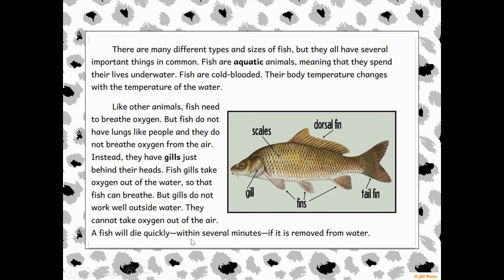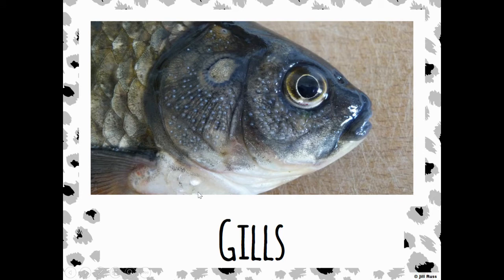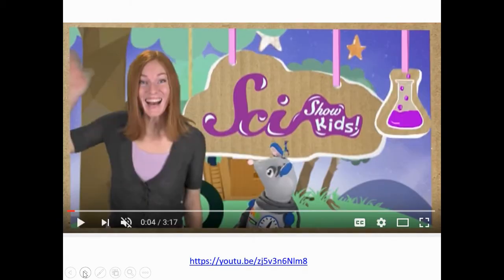Looking at this picture of the fish, here are the gills — this is where the water passes back and forth, and the gills are designed to take out the oxygen. If a fish comes out of water, air will pass through, but the gills can't extract oxygen from the air. A fish will die quickly, within several minutes, if removed from water. Other components of the fish are their fins on the bottom, their dorsal fin on the top — dorsal means back — and their tail fin.